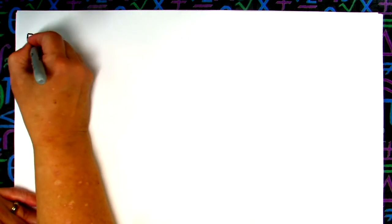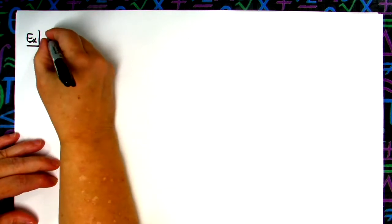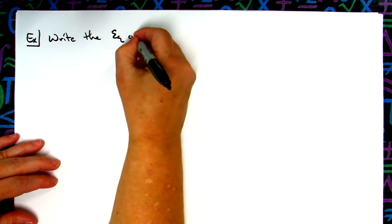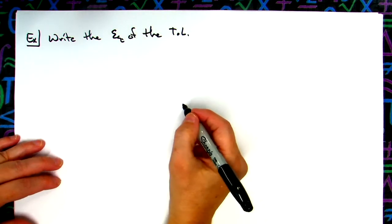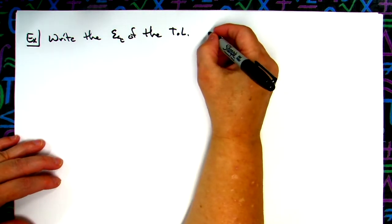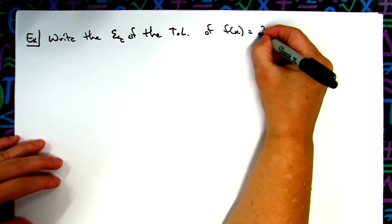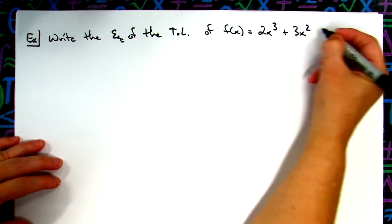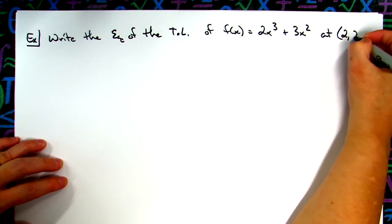The first step is always going to be: write the equation of the tangent line. So, write the equation of the tangent line of f(x) = 2x³ + 3x² at the point (2, 28). That would be part A, then we'll do part B.